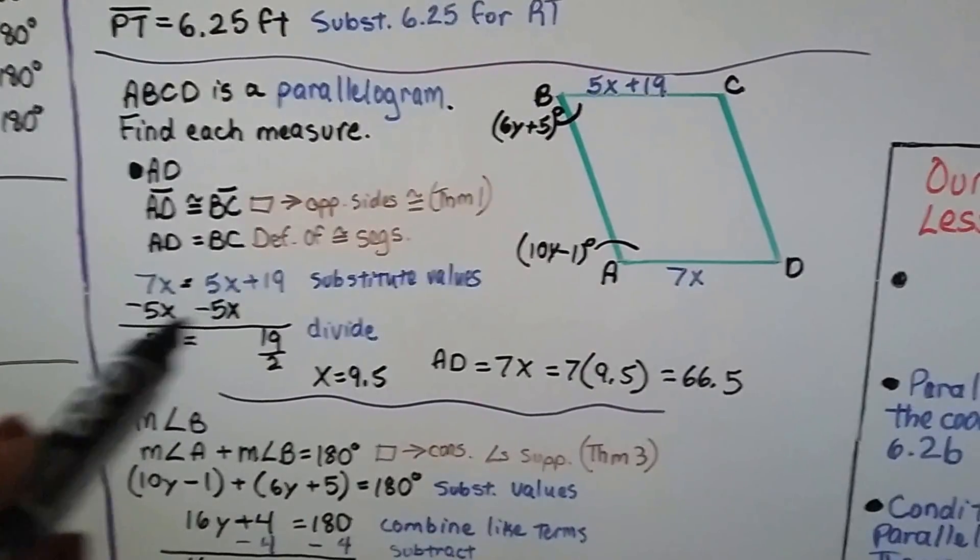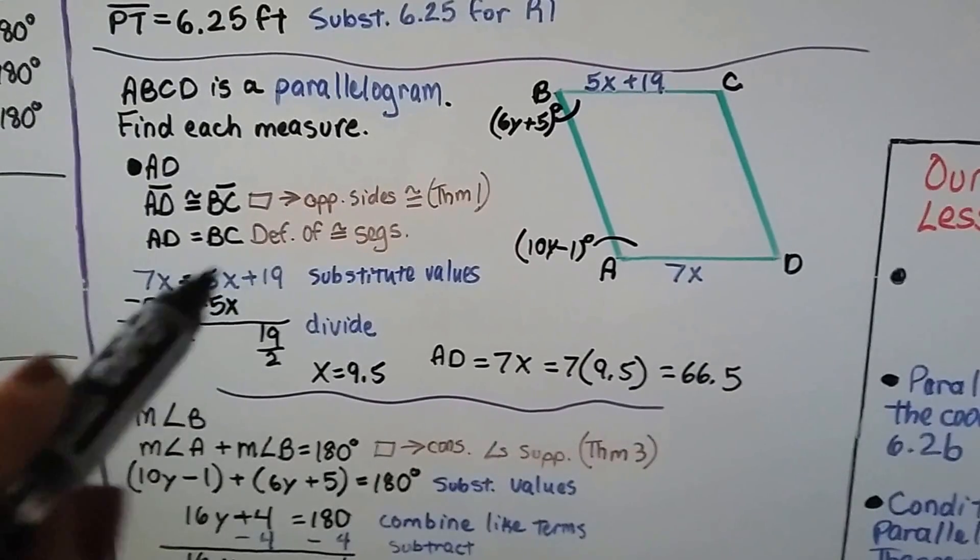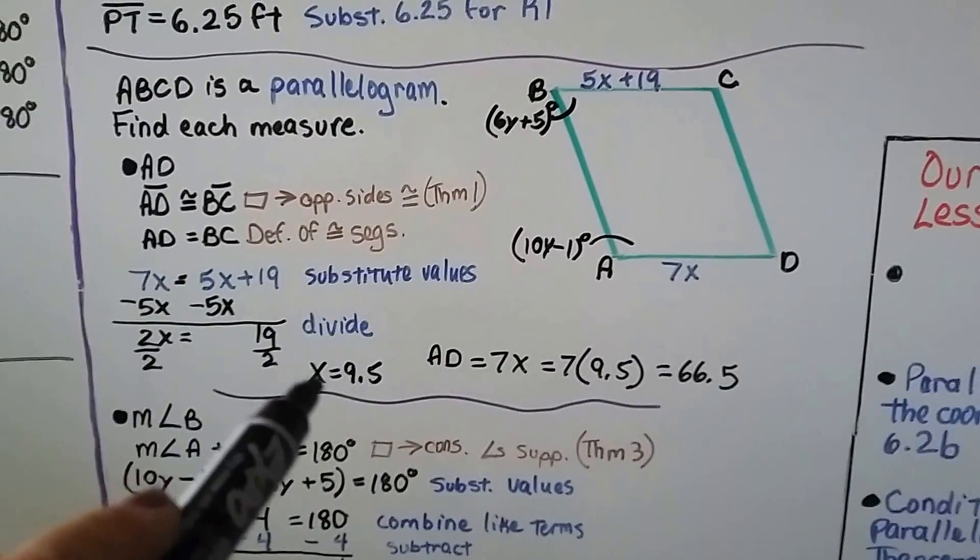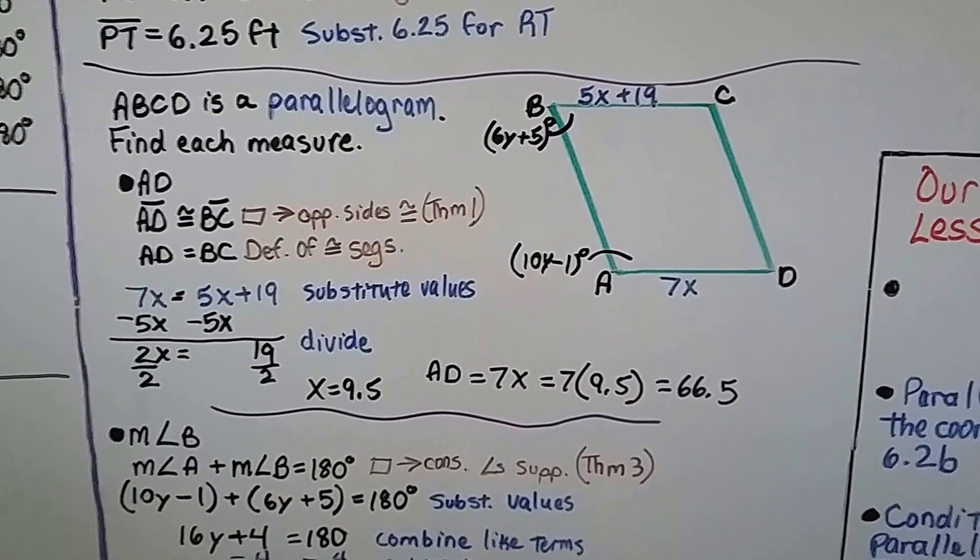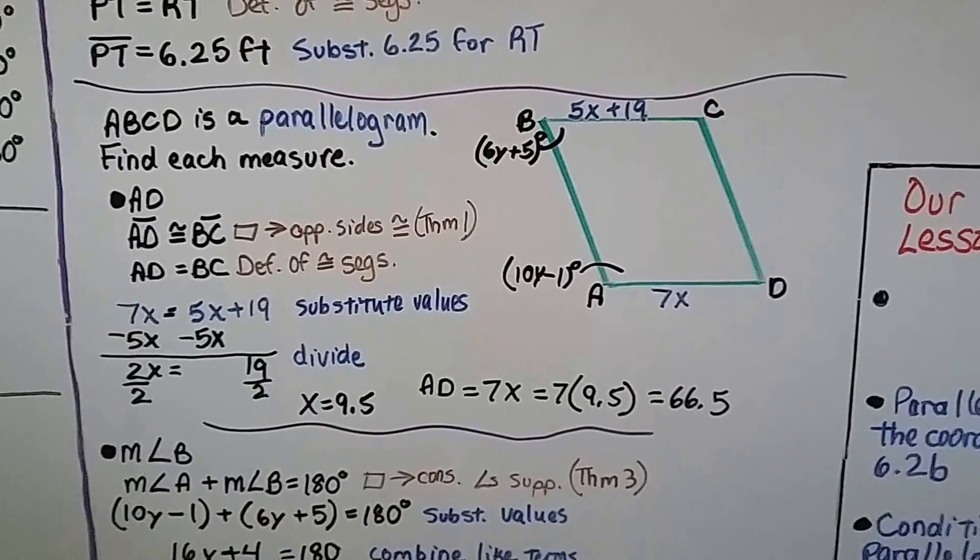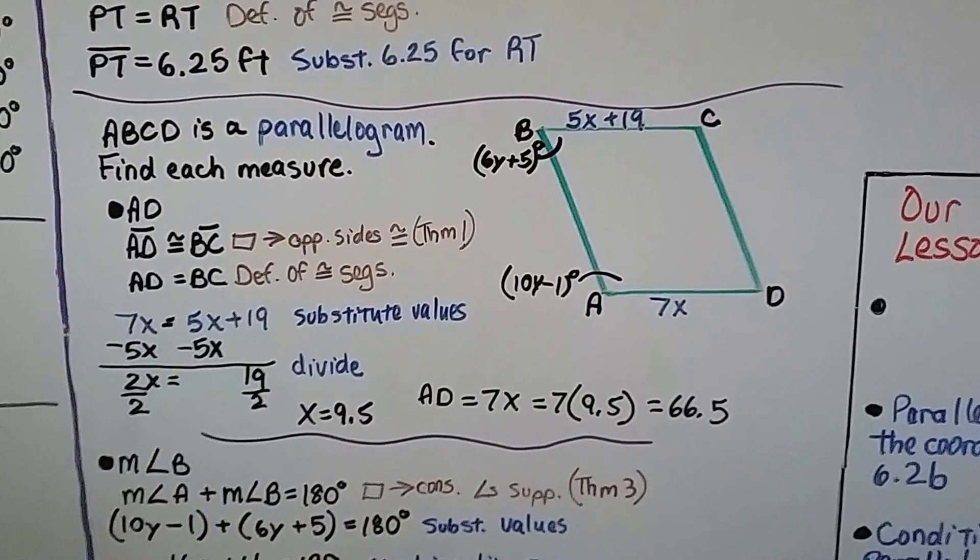We can subtract 5x from each side of the equation and eliminate this and get 2x equals 19. We divide by the coefficient and we get x is equal to 9.5. Well, if x is equal to 9.5, we just multiply it by 7 and we know that AD is 66.5.